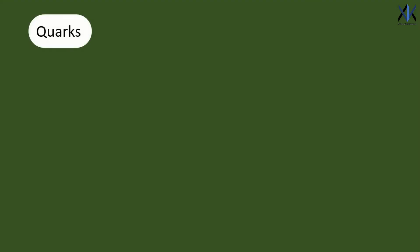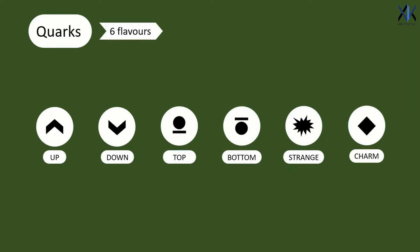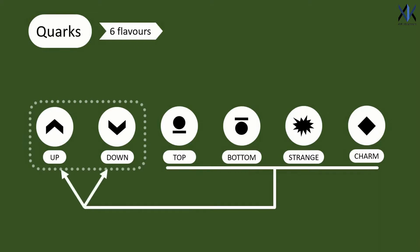Quarks are the fundamental constituent of everything. They are of six different types, or flavors. Up, down, top, bottom, strange, and charm. The up, down quarks have the smallest masses of the six, and form majority of quark population. This is because the rest four are heavy and unstable, and they often break down to up and down quarks.